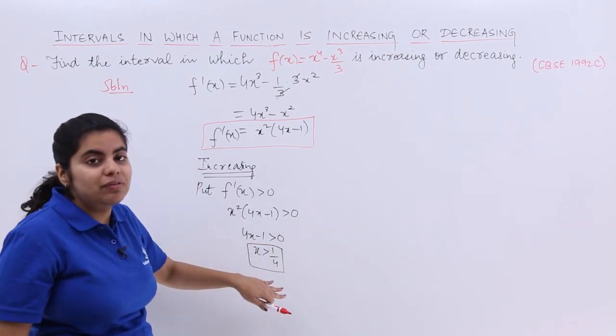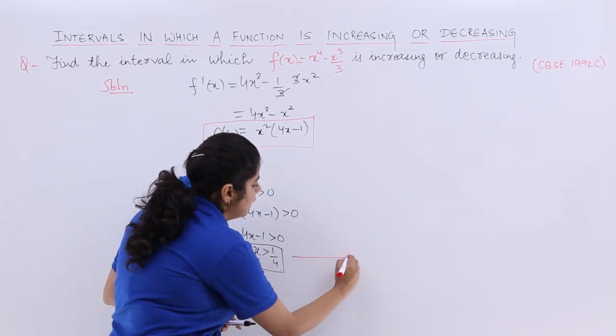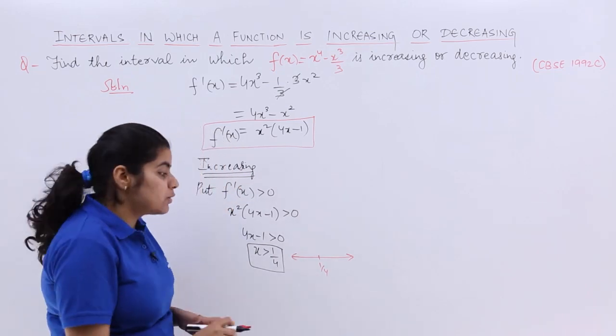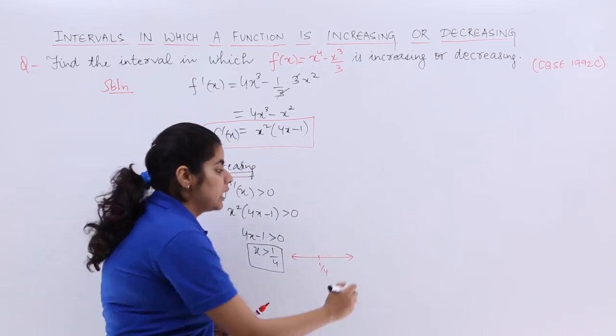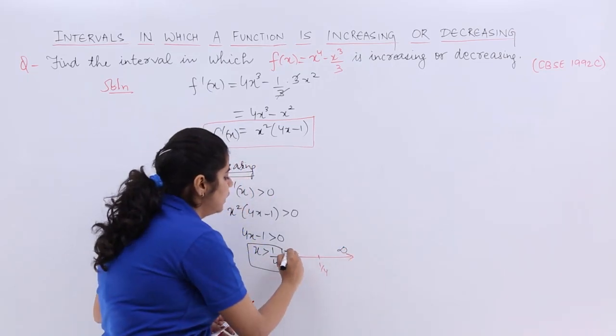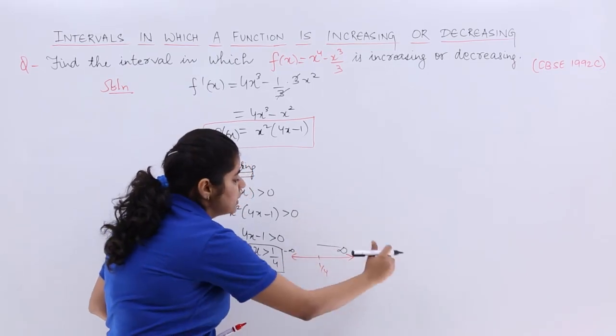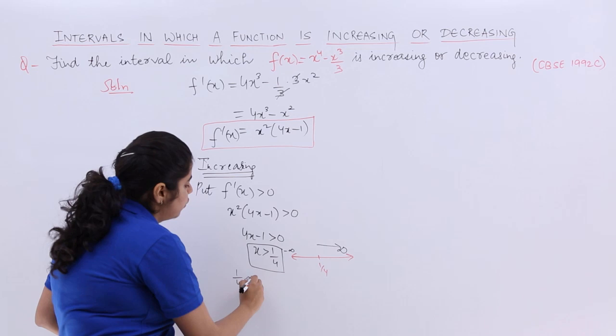Now it is not asking the value of x, rather the interval. The interval means what? Suppose you have a number line and here it says the value 1/4. So it says that x should be greater than 1/4 means on the positive side. Considering here the limit as infinity, here as minus infinity. So greater than 1/4 means this side.